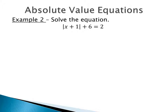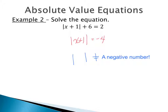Same idea with this next problem. We have the absolute value of x plus 1 plus 6 equals 2. First we want to move that 6 over, so we have the absolute value of x plus 1 equals negative 4. At this point, we need to stop and think about what absolute value means — it's the distance a number is from 0, which is always positive. We have the absolute value of some quantity equaling negative 4, and this can never happen. An absolute value will never yield a negative number. Since our distance can't be negative, we have no solution.